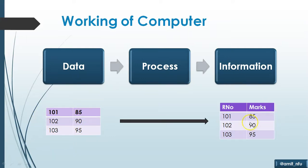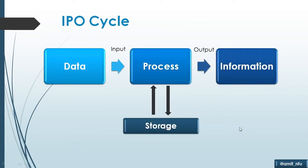But when we process it, it becomes information — that roll number and marks are these figures. So we are able to know that roll number 101 has scored 85 marks, or the student with roll number 102 has scored 90 marks, and so on. It becomes meaningful, processed data which is called information. So on the left side it is data, and on the right side it is information.